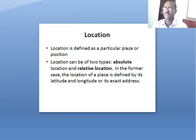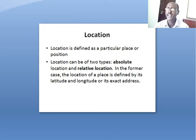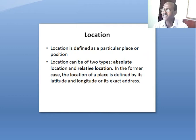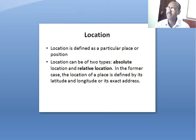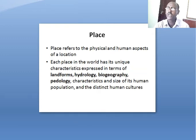Location is simply defined as a particular place or position. Location can be of two types: absolute location and relative location. In the case of absolute location, the location of a place is defined by its latitude and longitude, or its exact address. Latitude and longitude are two important pointers here.